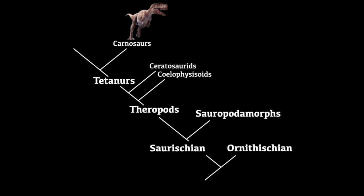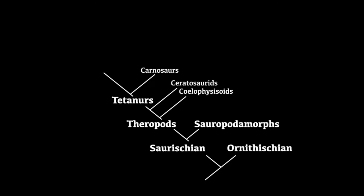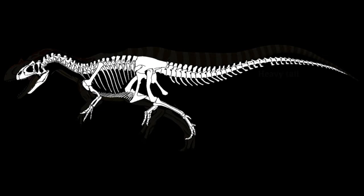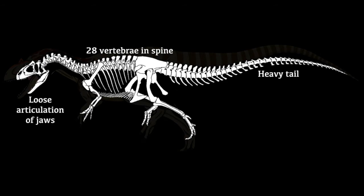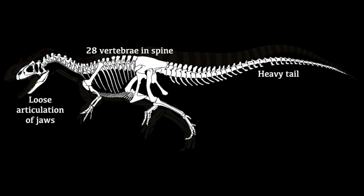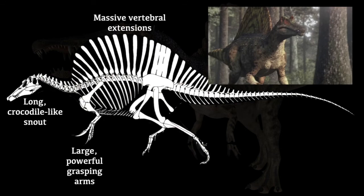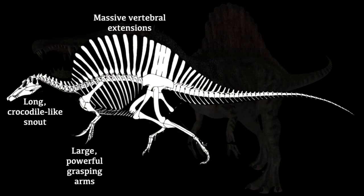Next come the first group of titanosaur theropods, the carnosaurs — the start of the really big theropod dinosaurs. Their thighs were longer than their tibias and their jaws were especially long and narrow. The typical early carnosaur is Megalosaurus. The carnosaurs split into the allosaurs and the spinosaurs. Allosaurs had a heavy tail, 28 vertebrae in the spine, and loose jaw articulation allowing them to open their mouths incredibly wide — amazingly successful in the Jurassic and growing to immense sizes in the Cretaceous. Examples include Allosaurus, Giganotosaurus, and Carcharodontosaurus. Spinosaurs had large powerful grasping arms, long crocodile-like snouts, and spines off the vertebrae, as in the infamous Spinosaurus, along with Suchomimus and Baryonyx.